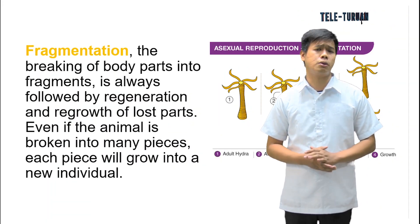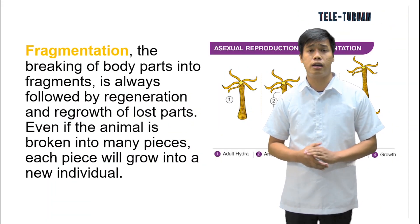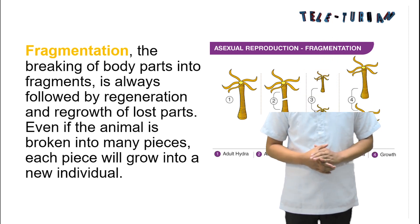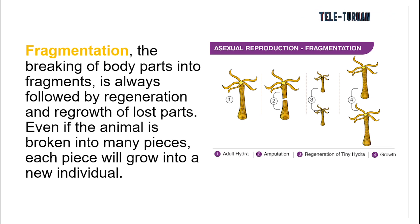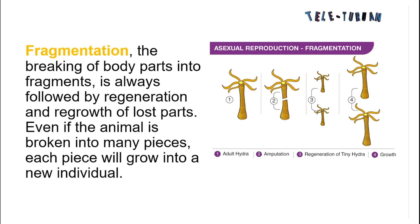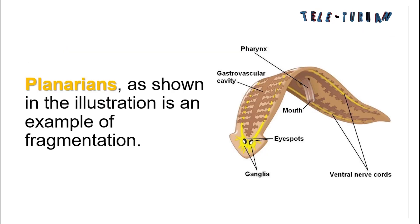Another form of asexual reproduction is fragmentation. The breaking of body parts into fragments is always followed by regeneration and regrowth of lost parts. Even if the animal is broken into many pieces, each piece will grow into a new individual. Planaria, as shown in the illustration, is an example of fragmentation.